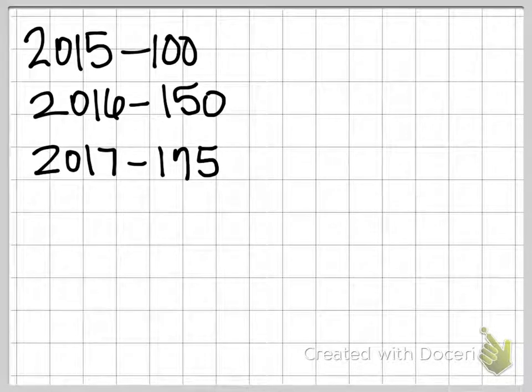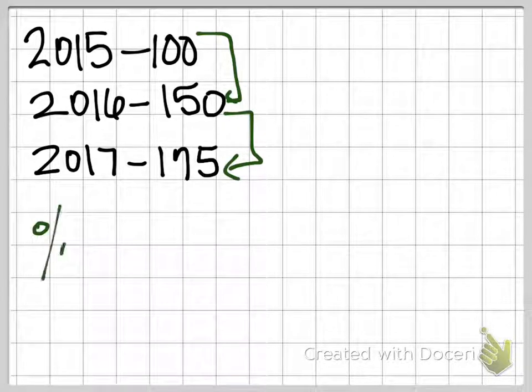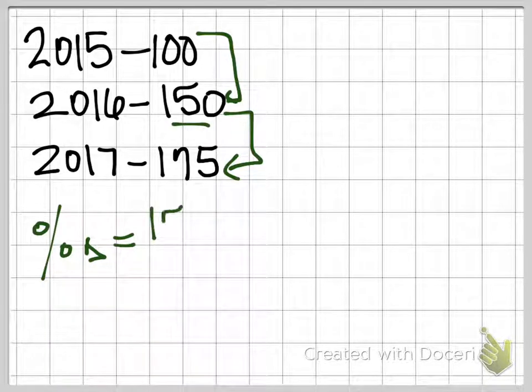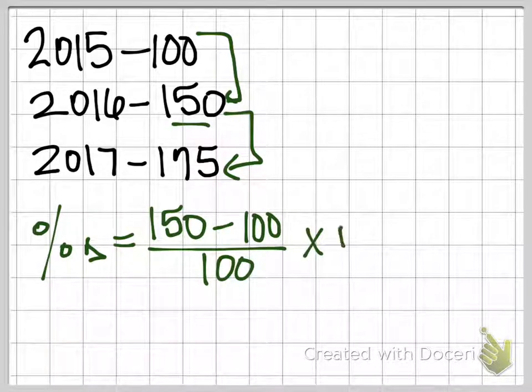And so I want to calculate the rate of inflation going here, 2015 to 2016, and then here, 2016 to 2017. So we'll start, and we'll say, well, it is now 150 in 2016. Last year it was 100. We divide by last year's 100 and multiply by 100. So that's my setup for my formula.